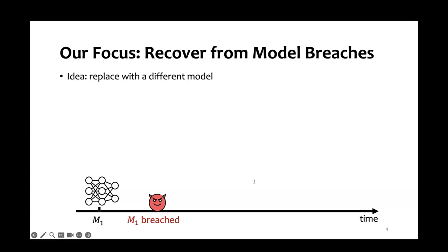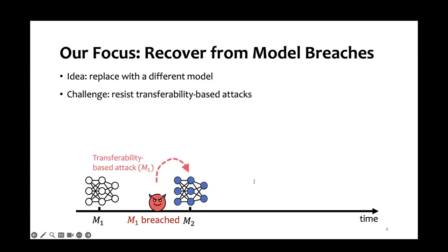When we lose something, we replace it. So here, the idea is that we replace the breached model M1 with a new one, M2. But this is challenging, because now the attacker has white-box access to M1 and can generate adversarial examples from M1 and then transfer it to M2. Therefore, our new model has to be able to resist such transferability-based attacks.